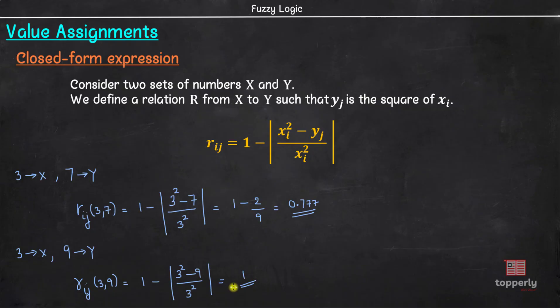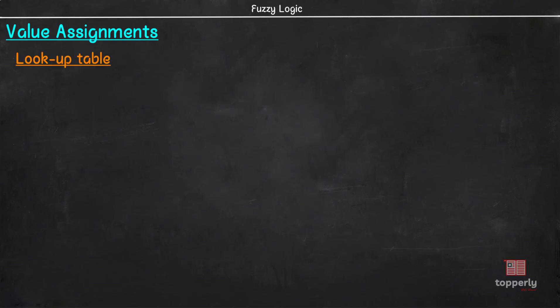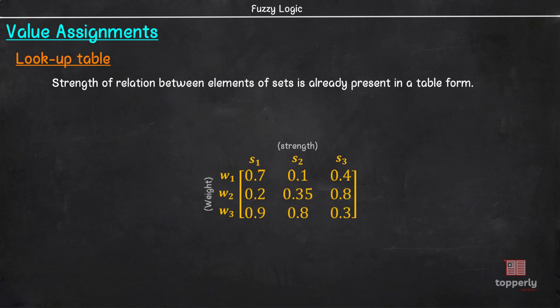I hope everyone understood the method of closed form expression. Next is lookup table. In this method, the strength of relation between the elements of sets is already written down in a table and we just need to take the value from that. As an example, consider this lookup table showing the relation between strength and weight of steel. Here, the relation matrix is already created based on knowledge and expertise. All we have to do is simply look at the table and get the membership value.